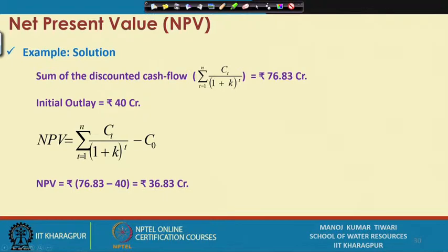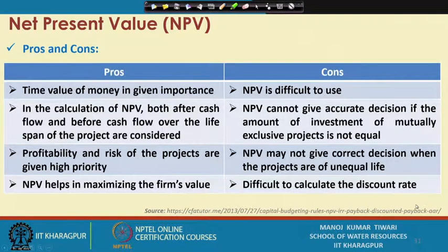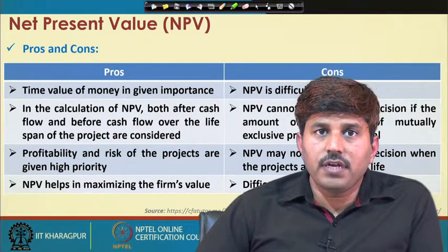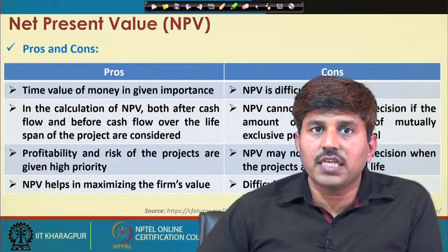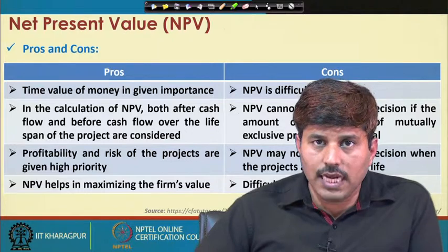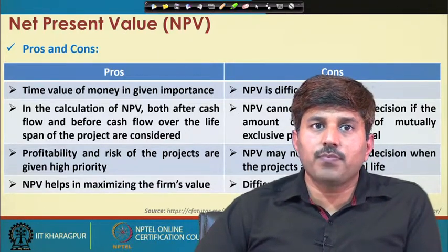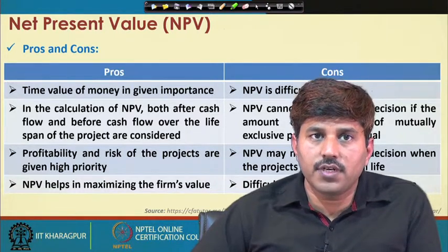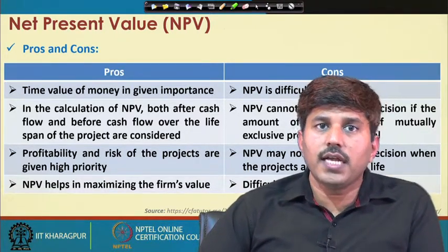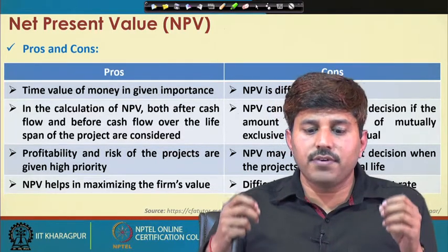Once we find the NPV of the project, we can decide whether it is economically feasible or not. NPV is one of the most preferred methods. Its advantages include that it considers the time value of money, and both after-cash-flow and before-cash-flow values are considered over the lifespan of the project. Profitability and risk of the project are given high priority based on the rate of return, and it helps in maximizing the firm's value.